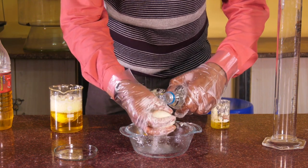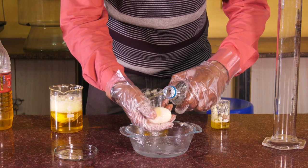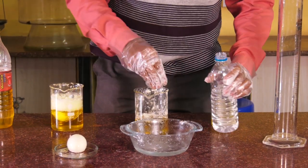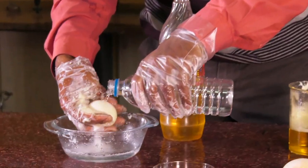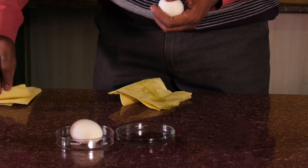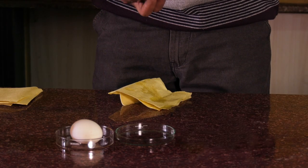Let us now see if the shell has dissolved. Yes, the shells are gone and the eggs have become rubbery. Let us now clean the eggs, wipe them dry and weigh them one by one.